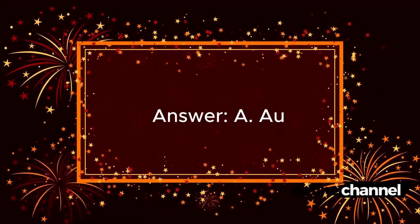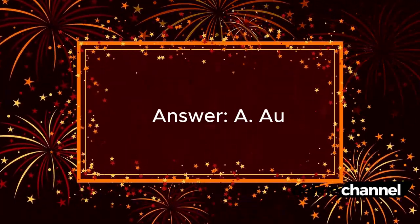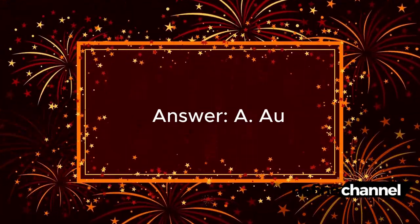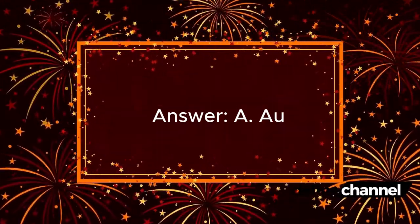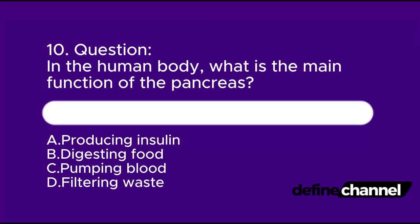Question 10. In the human body, what is the main function of the pancreas? A. Producing insulin. B. Digesting food. C. Pumping blood. D. Filtering waste. Which is the correct answer?